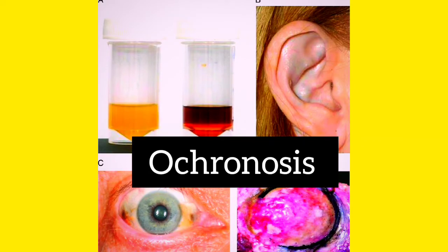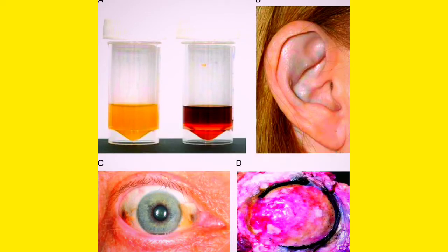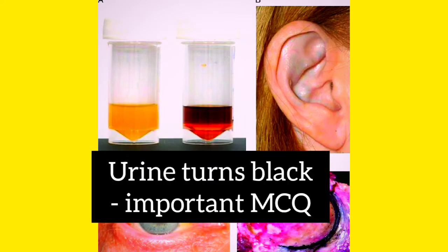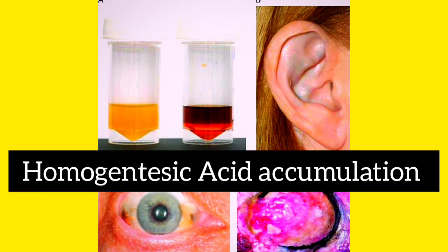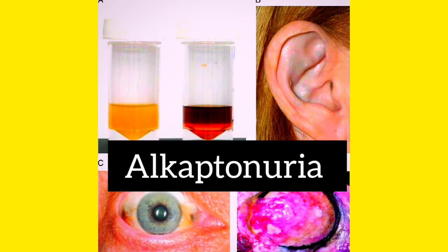In joints it produces ochronosis joint changes, and in the ears and eyes it also produces ochronosis. Ochronosis means the blackish coloration — the deposition of a black pigment. In the urine, when you keep the urine sample after some time, it turns black. All these changes are due to accumulation of homogentisic acid, and the name of the disease is alkaptonuria.